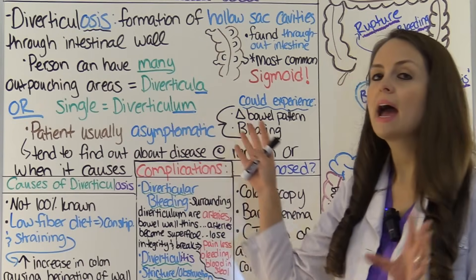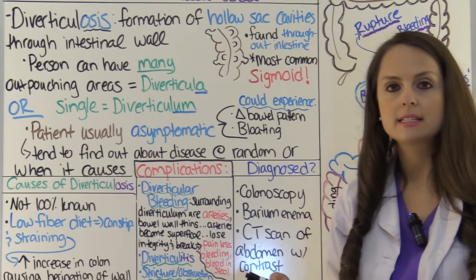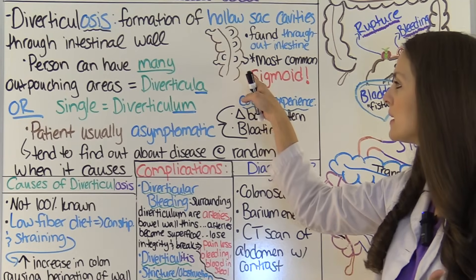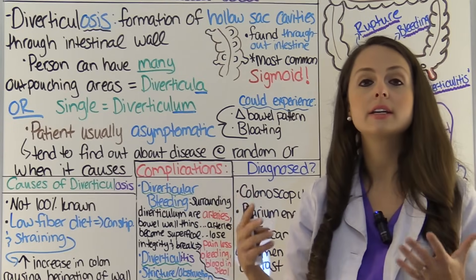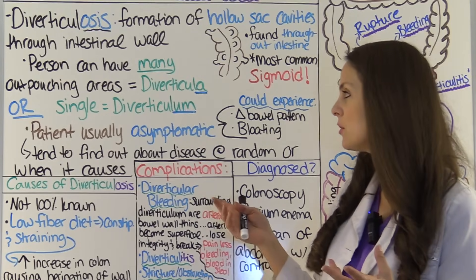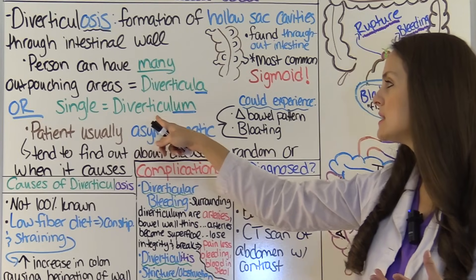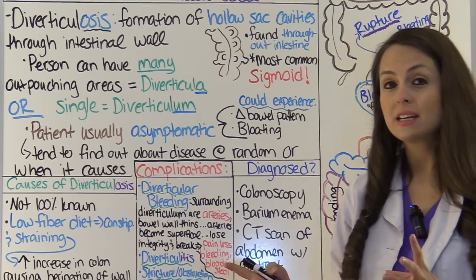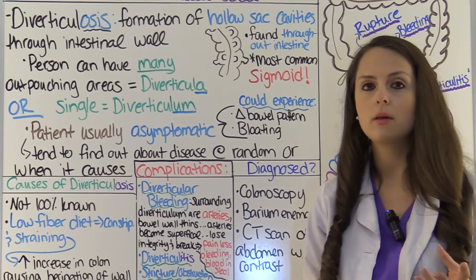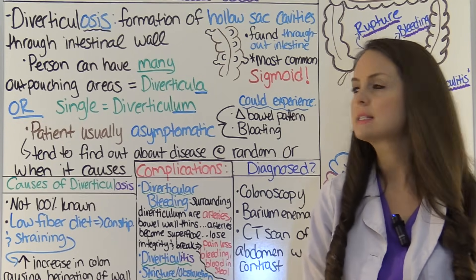Many patients can have many of these outpouching areas. Whenever you have a lot of them, they're referred to as diverticula. Or a patient can have just a single one, referred to as a diverticulum. But if they have a single one, over time they will probably develop more and they can increase in size.